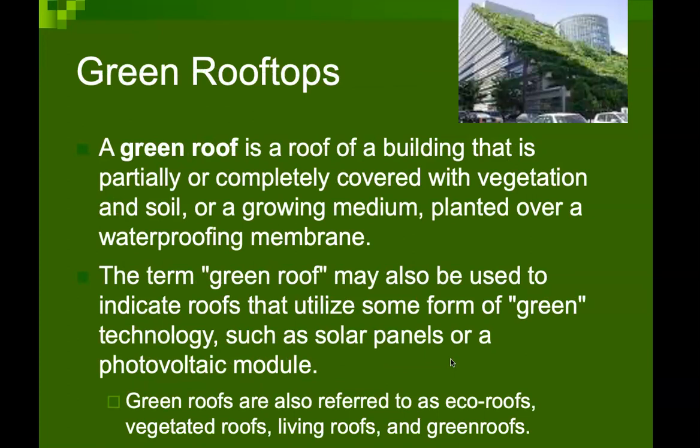What is a green rooftop? A green rooftop is a roof of a building that is partially or completely covered with vegetation and soil, or a growing medium planted over a waterproofing membrane. The term green roof may also be used to indicate roofs that utilize some green technologies such as solar panels or photovoltaic modules. Green roofs are also referred to as eco-roofs, vegetated roofs, or living roofs.